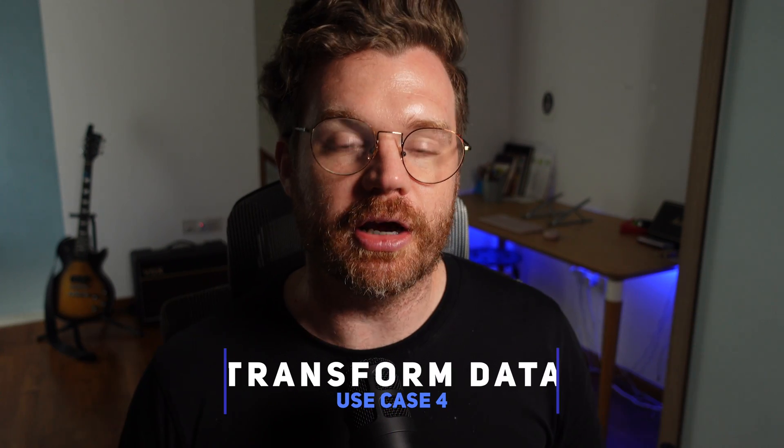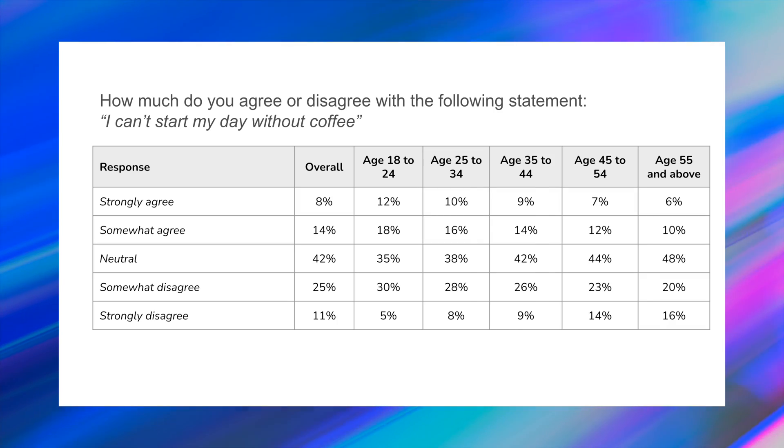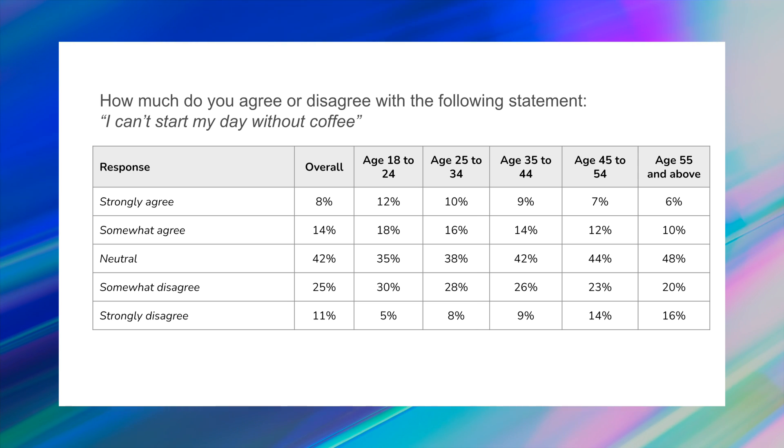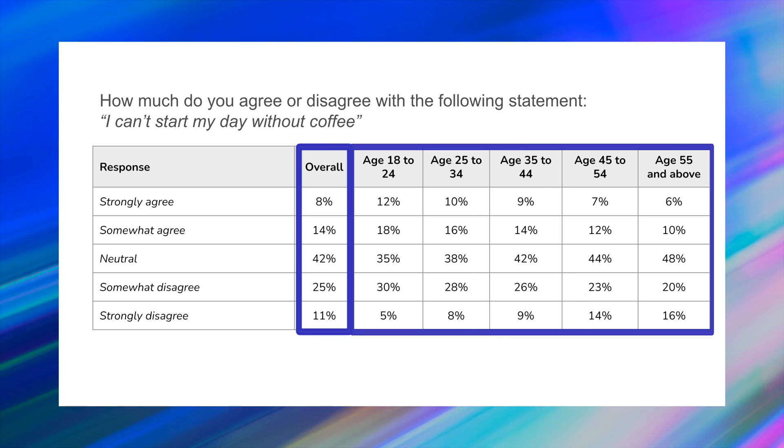The next example is using ChatGPT to process or transform data based on your requirements. Again using quantitative survey-based data — common things a researcher might want are custom segments by combining answers across questions, or specific views of the data. A very common output is a crosstab, which aggregates data and creates columns for different segments — total sample, males, females, different age brackets, etc. With industry tools like SPSS you can do this quickly but it's expensive software; manually in Excel it could take hours. In ChatGPT I can get this done in about 20 to 30 seconds.